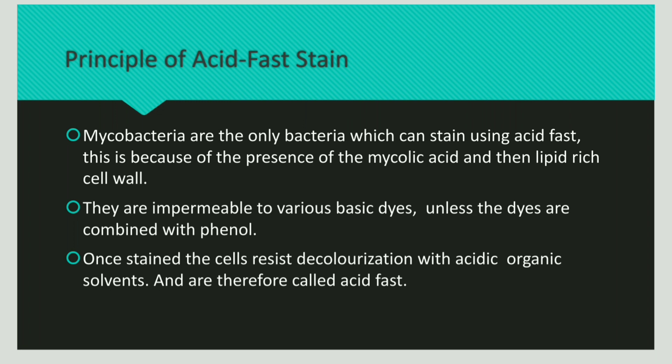Now let us discuss the principle of acid-fast staining. Mycobacterium is the only species known to be stained using acid-fast staining. This is because of a special characteristic of its cell wall: the cell wall is rich in lipids and also has a presence of mycolic acids. Due to these, the bacteria remain impermeable to most basic dyes, whereas if the dye has a presence of phenol, it is permeable.